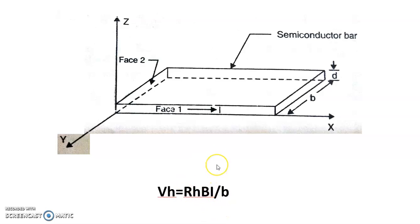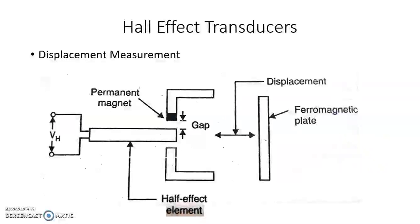This concept is used to measure different quantities in terms of Hall voltage. Hall effect transducers are transducers in which the Hall effect is used to measure different non-electrical quantities such as displacement, level, force, or pressure. Commercial Hall effect transducers are made up of semiconductor materials like germanium, silicon, or other semiconductor materials.